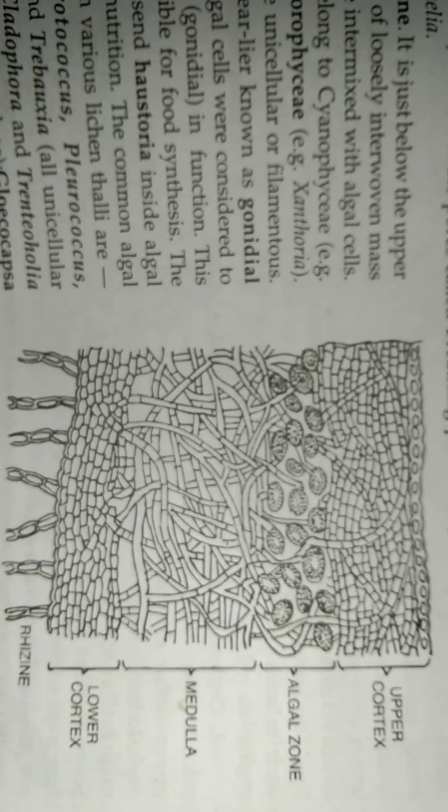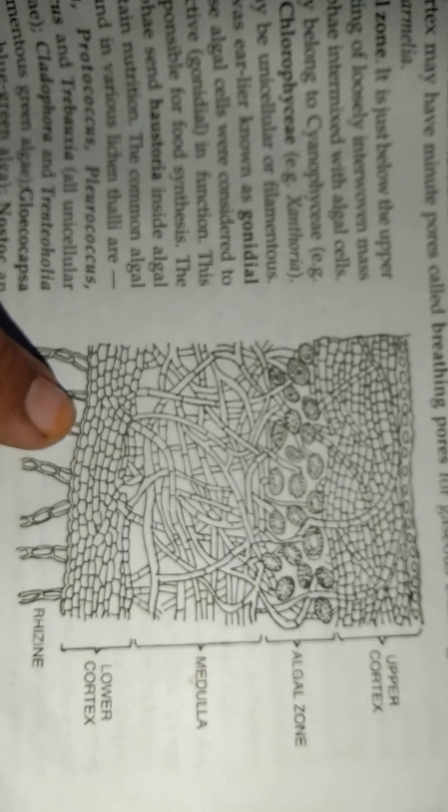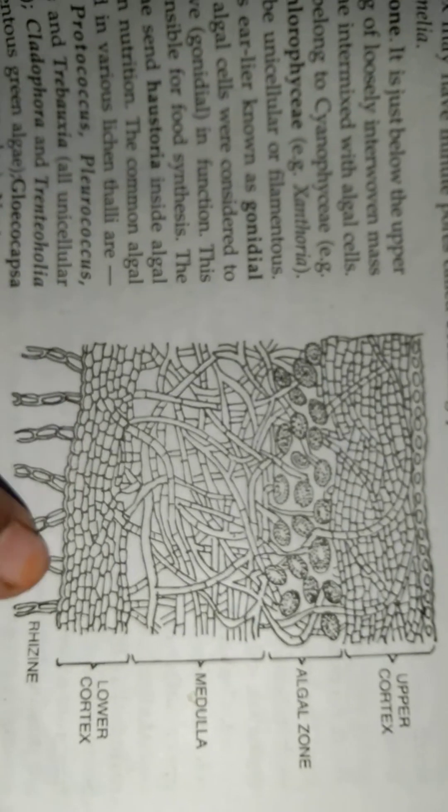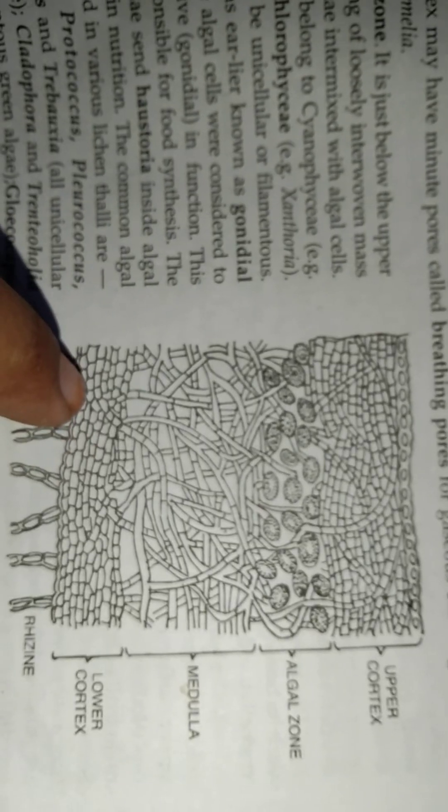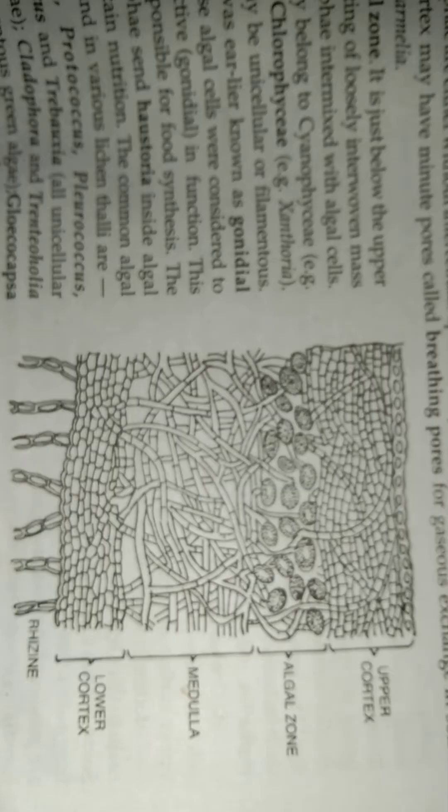Next, lower cortex. This is also made up of the compactly arranged fungal hyphae which are without intercellular spaces. This zone is also made up of only the fungi.